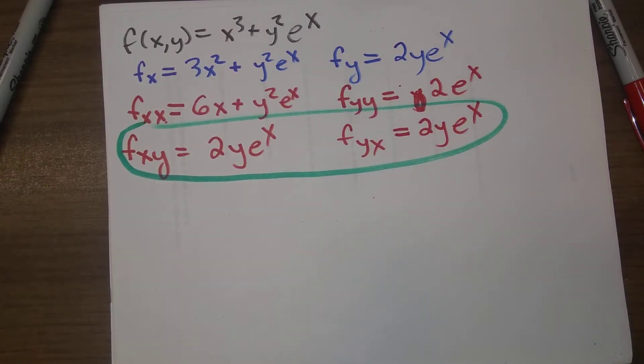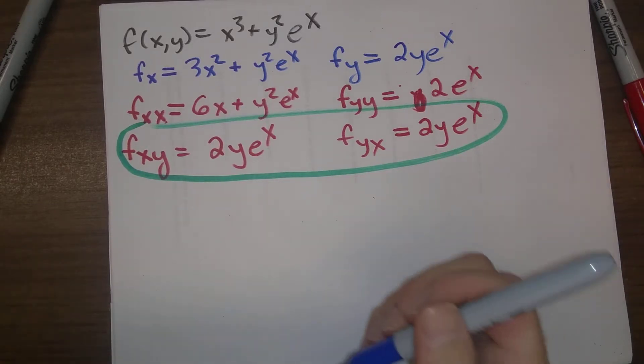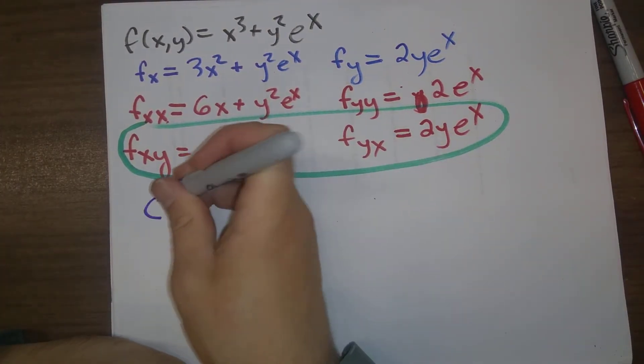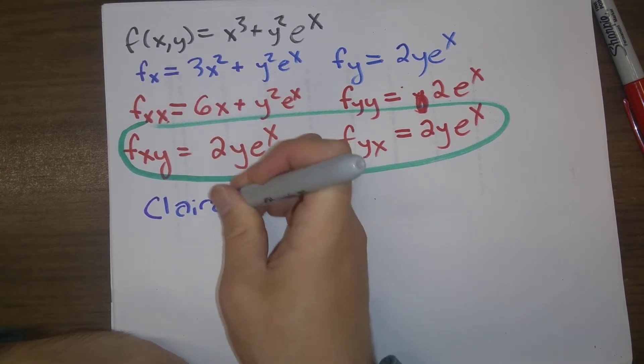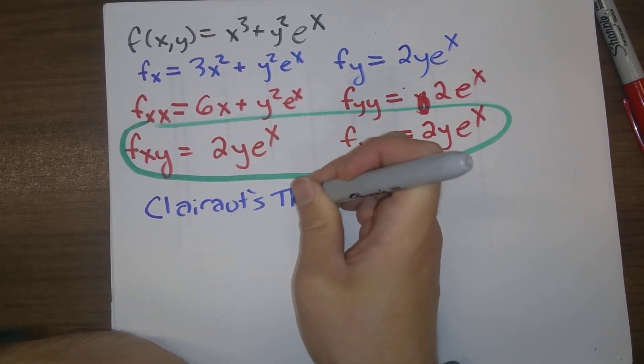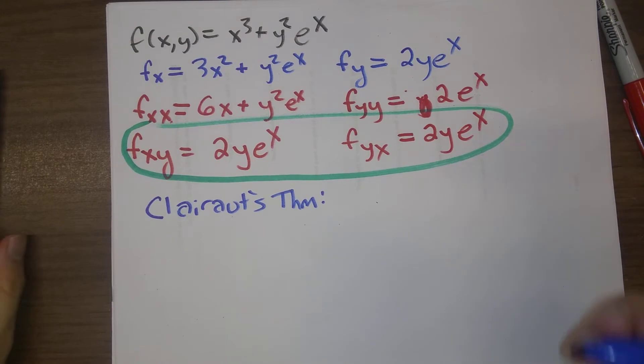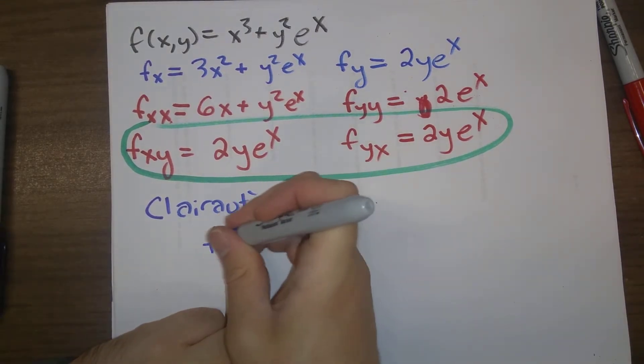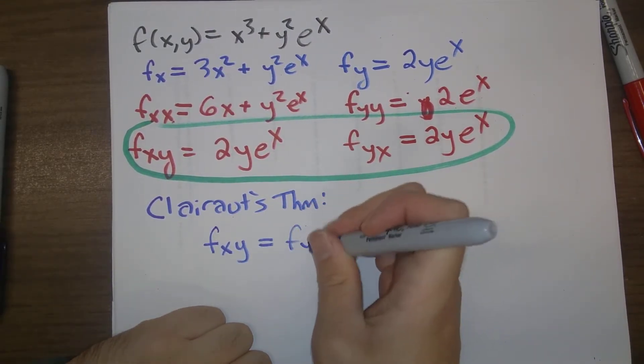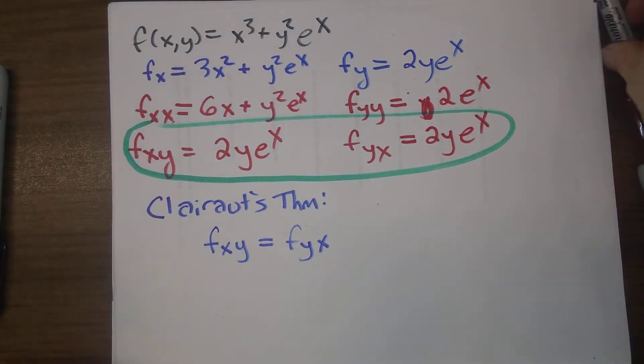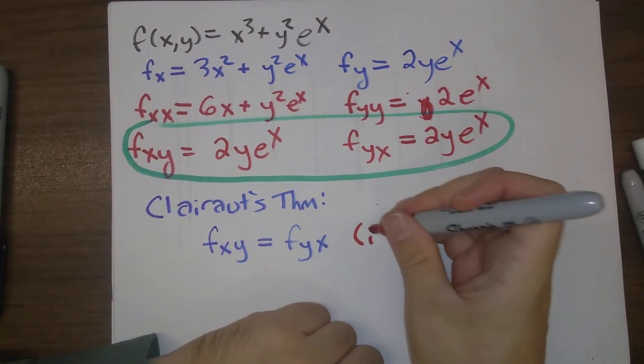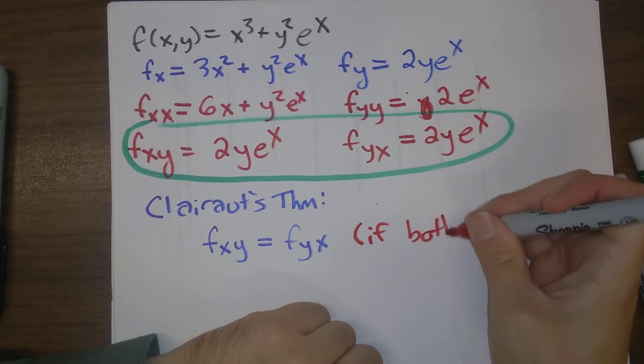And that's not an accident. If I did a different example here, you would see that in most cases, f_xy is equal to f_yx. And this is what is known as Clairaut's theorem. So Clairaut's theorem tells you that yes, f_xy is equal to f_yx, as long as they are both continuous.